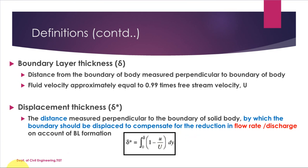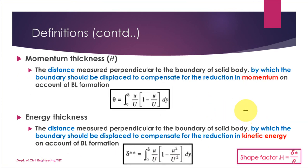The next term is momentum thickness (θ). Due to the formation of the boundary layer there is also a reduction in momentum. Momentum thickness is the distance by which the boundary should be displaced to compensate for the reduction in momentum. This equation should also be memorized.